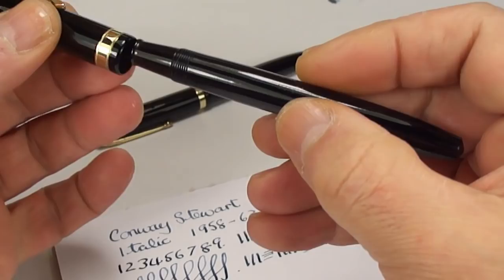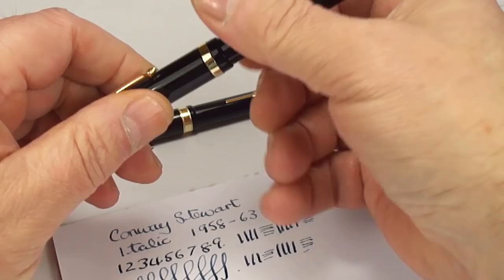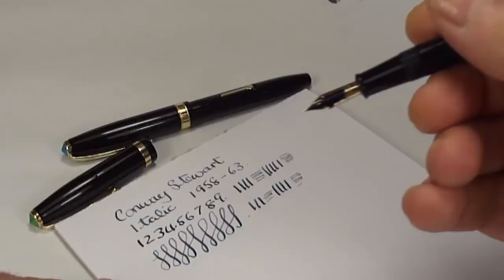Let's give the nib a little bit of a wipe. So, there's a brief writing sample. You can see it's a lovely italic nib. It's got a broad line on the downward stroke, on the cross stroke. We've got a lovely fine line, which is how you would expect an italic pen to write. Just out of interest. I mean, there shouldn't be any variation on this nib. Because, as we said, this is a...